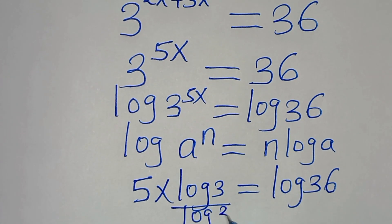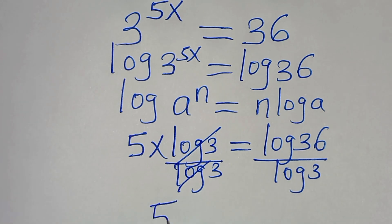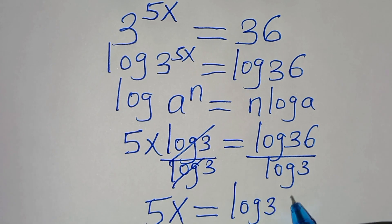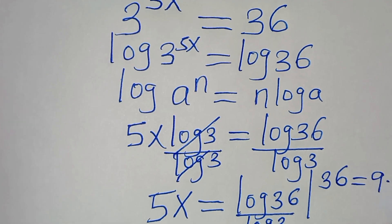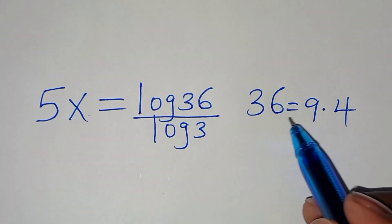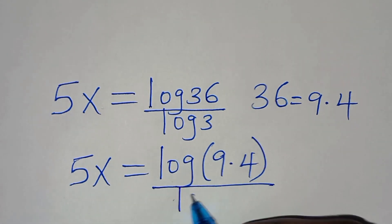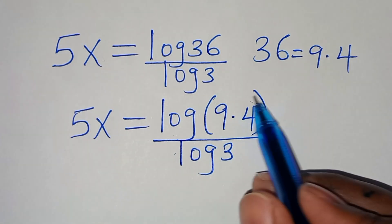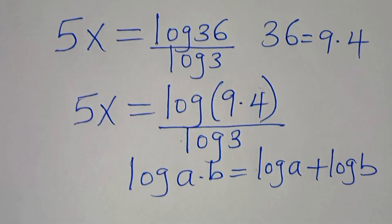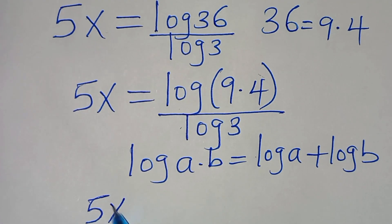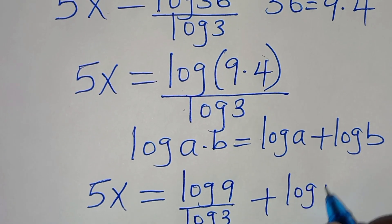Dividing both sides by log 3, we simplify to get 5x equals log 36 divided by log 3. We can express 36 as 9 multiplied by 4, so substituting gives 5x equals log(9×4) divided by log 3. Since log(a×b) = log a + log b, this becomes log 9 divided by log 3, plus log 4 divided by log 3.